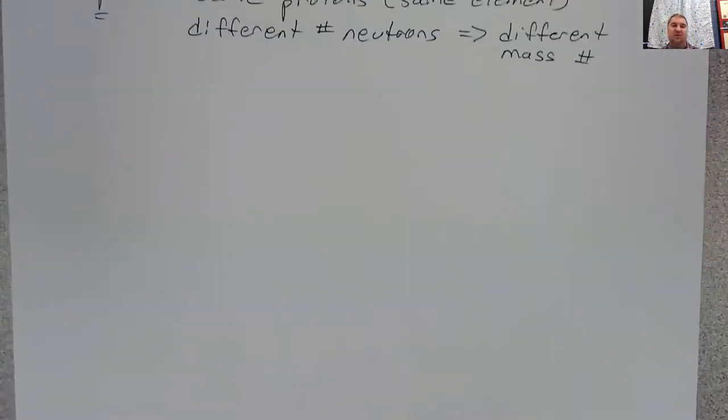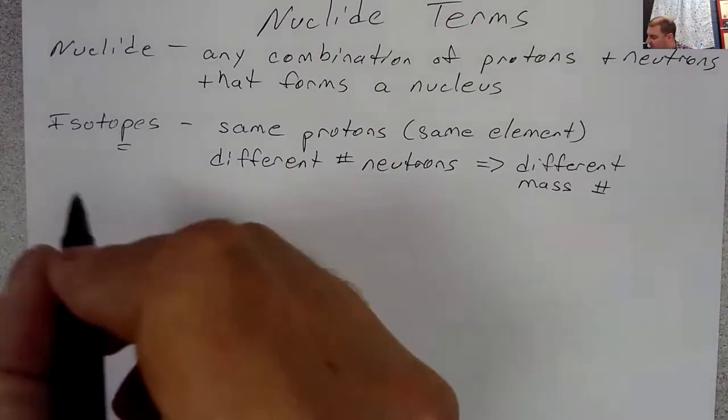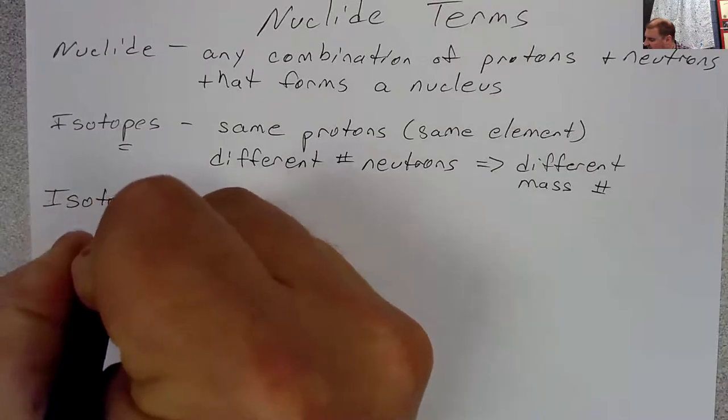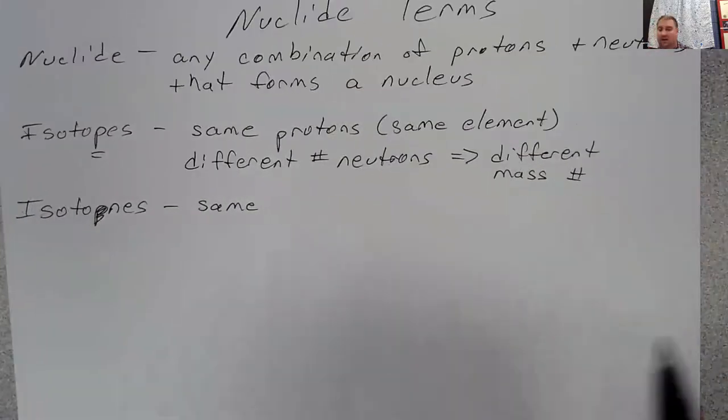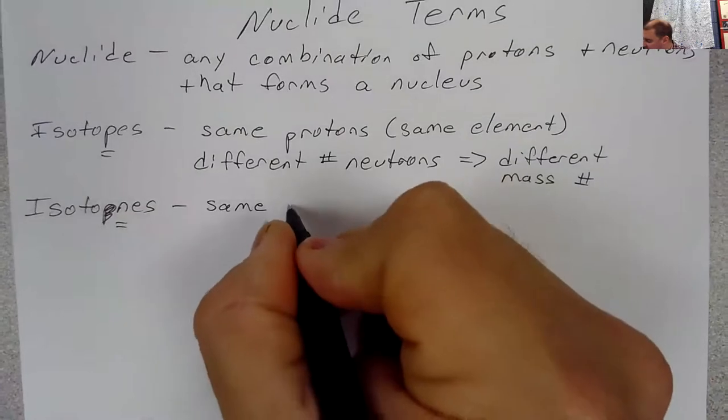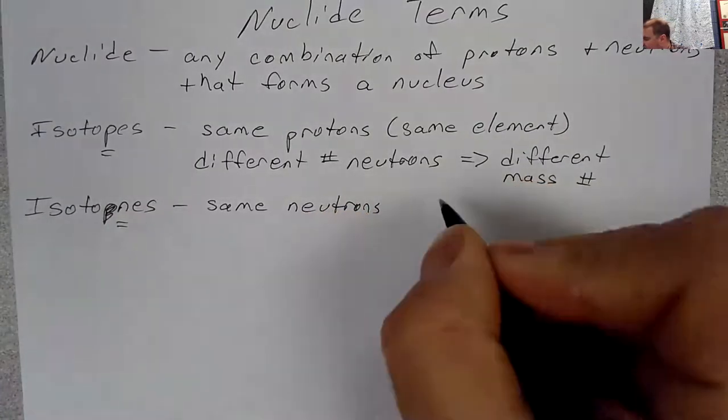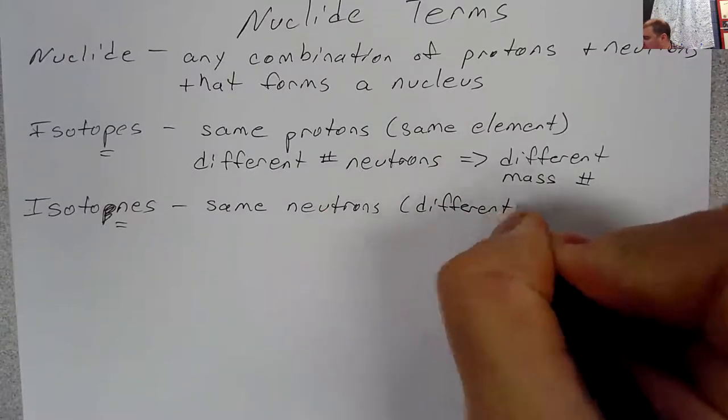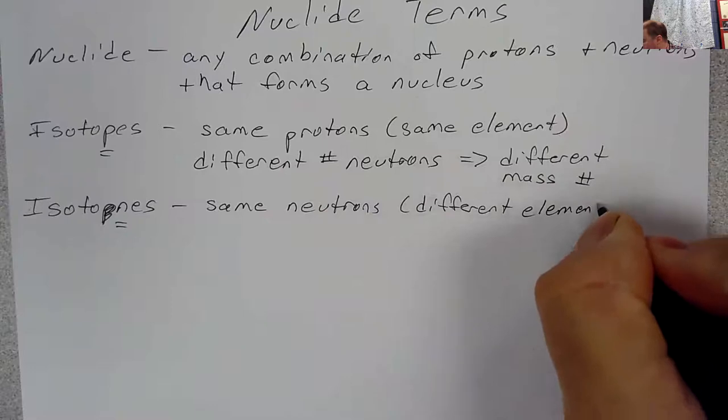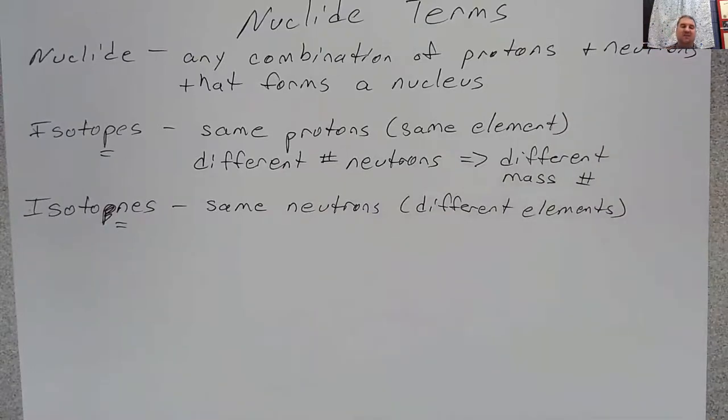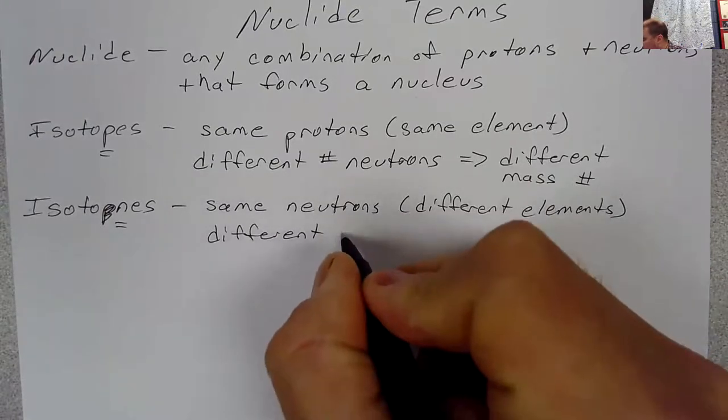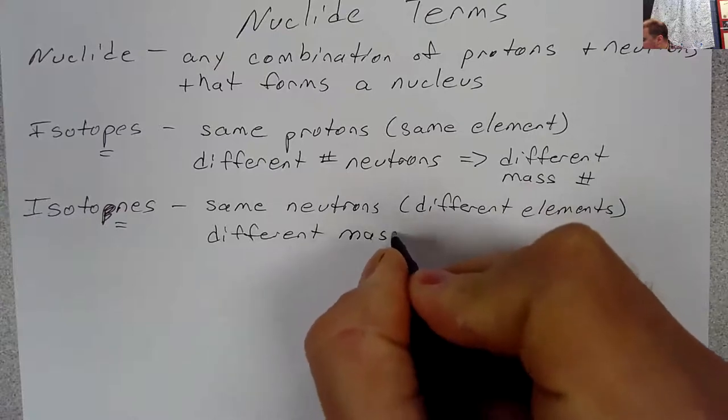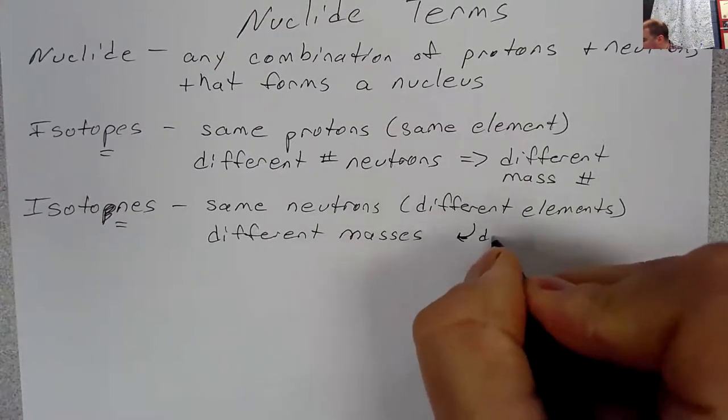Besides isotopes, we also have isotones. So if isotopes had the same numbers of protons, what do you think isotones have the same number of? Because it's got an N in the name, hopefully you said same neutrons, which means they're going to be different elements. Yeah, same neutrons, different elements, different masses. So they're all going to have the same number of neutrons, different masses, because they have different protons.